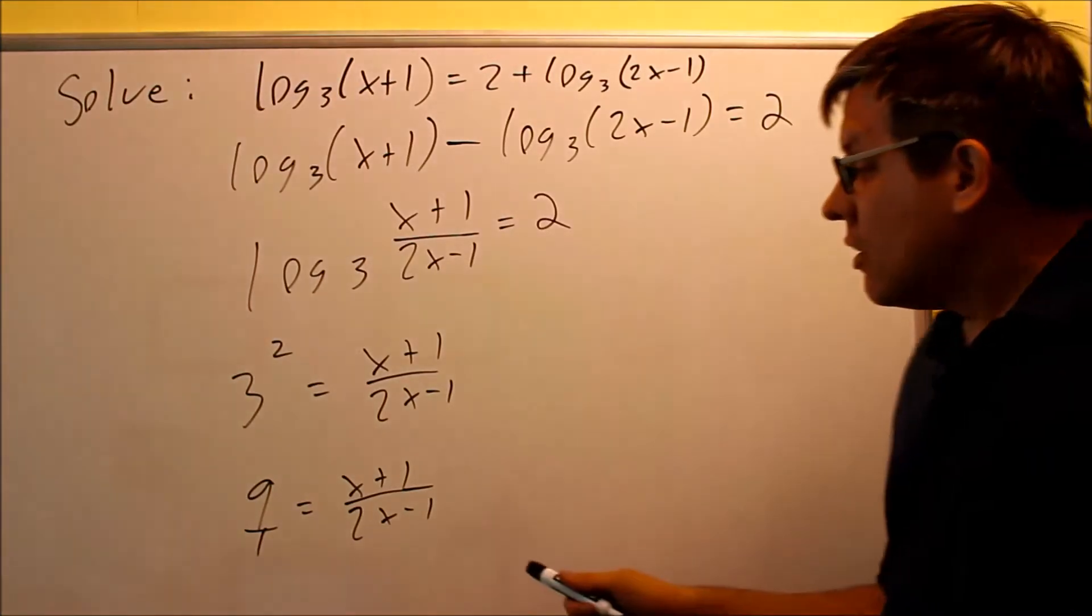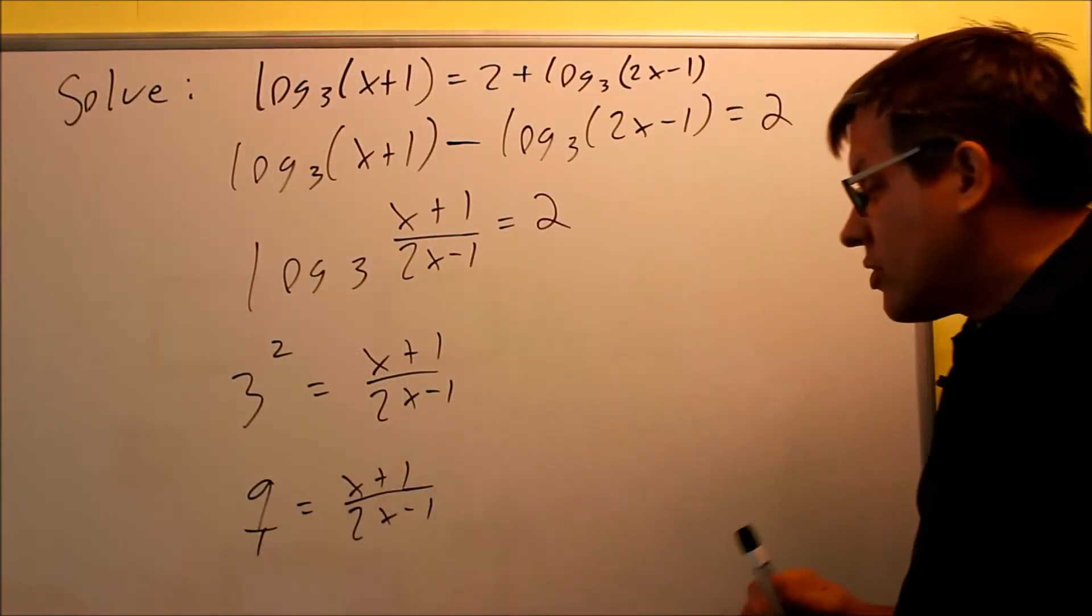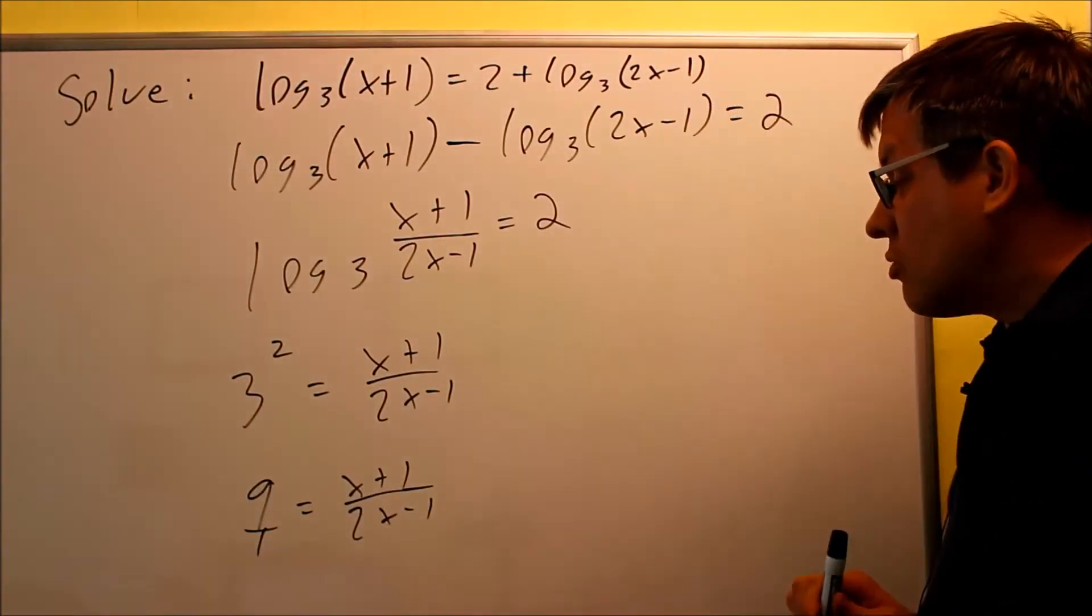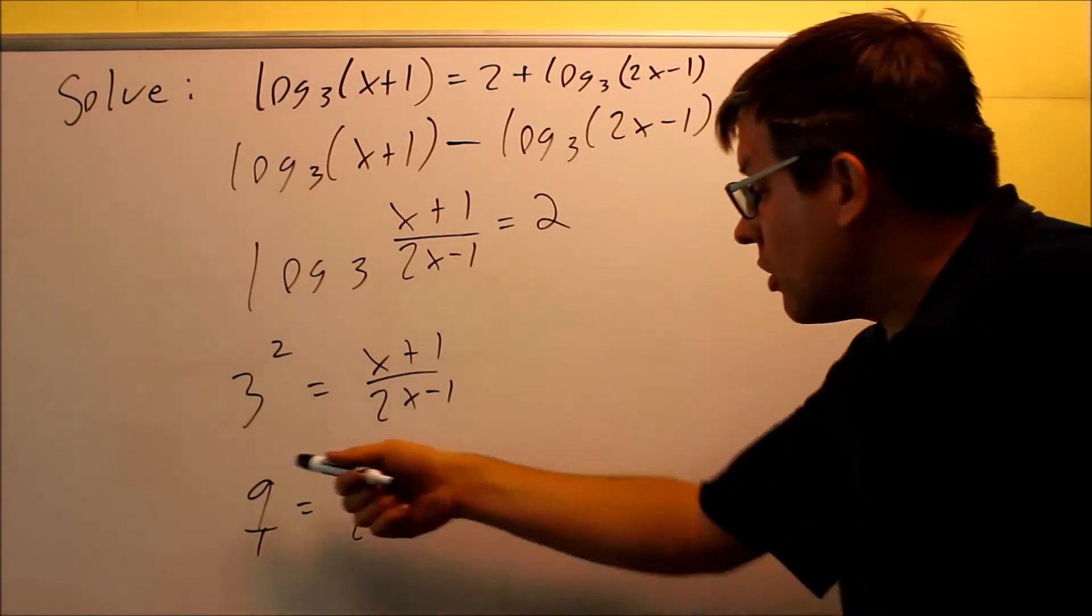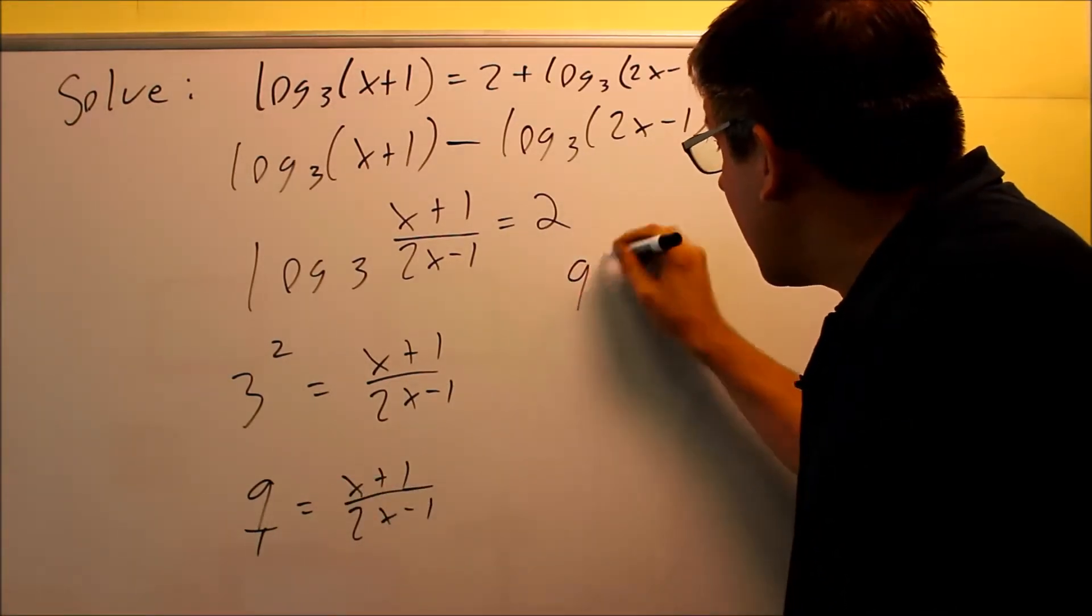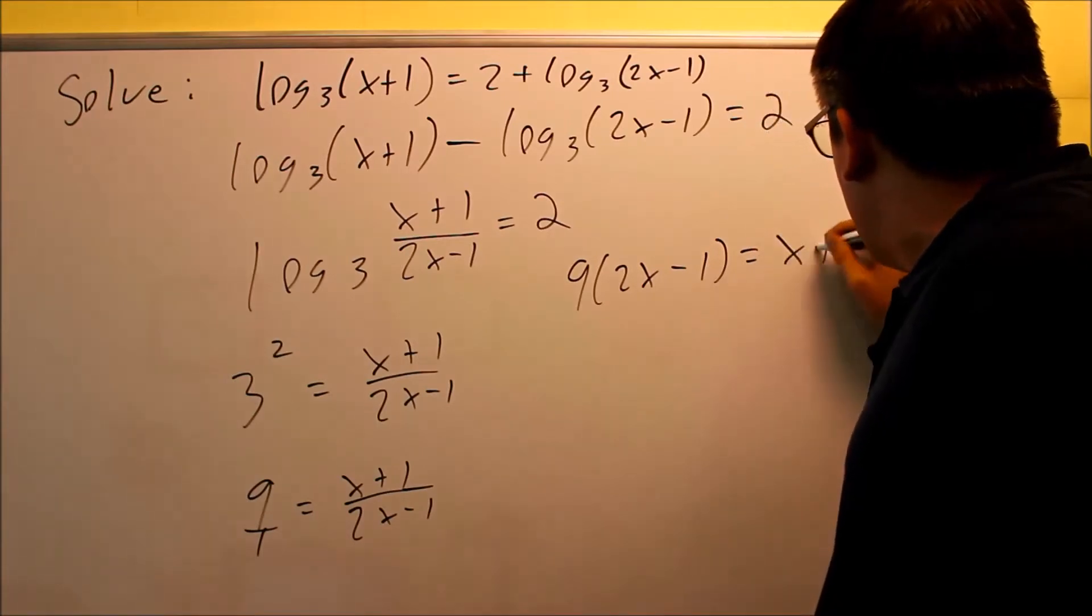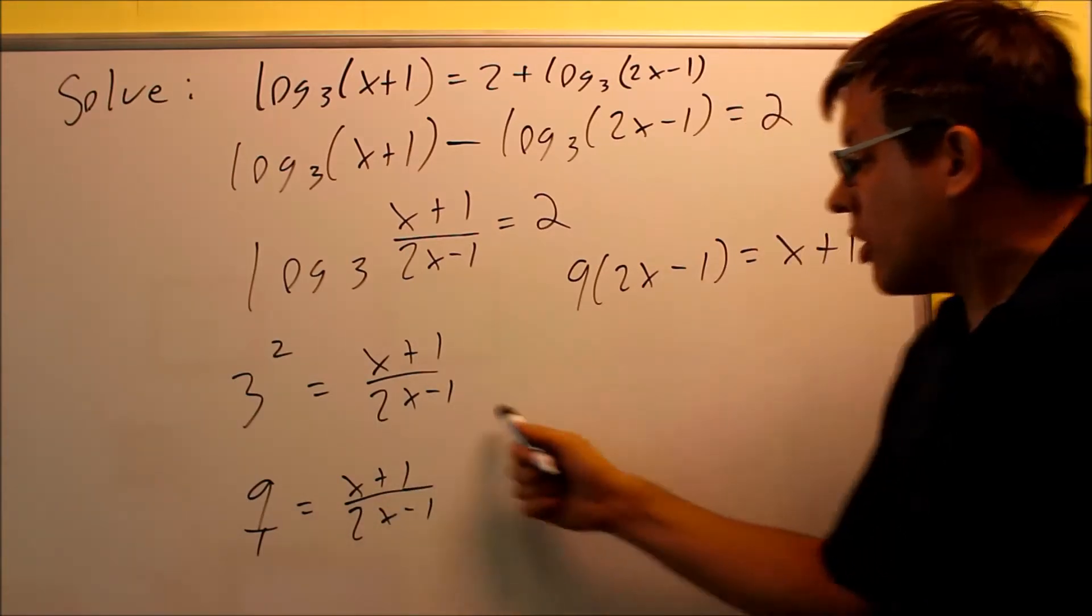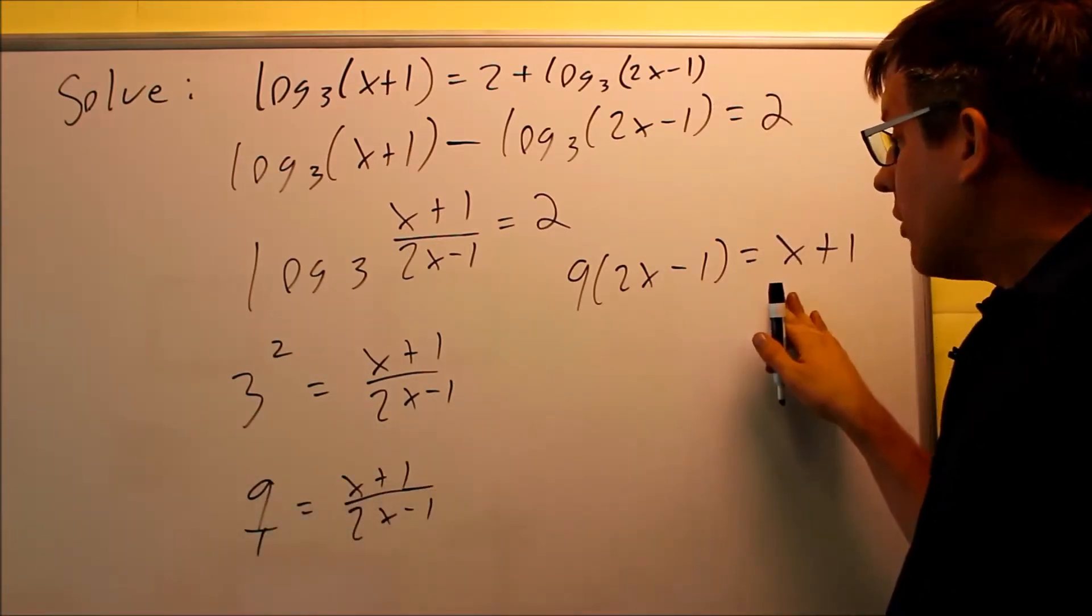We're going to cross multiply. Or again, you can multiply by LCD. If you want to multiply by 2x minus 1, that's okay as well. So we're going to cross multiply. 9 times 2x minus 1 is going to equal 1 times x plus 1. So again, we cross multiply those and we got that.